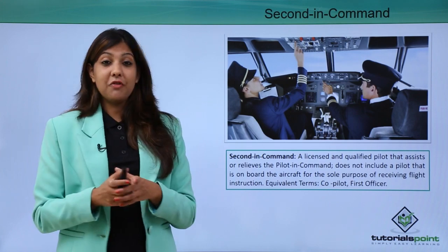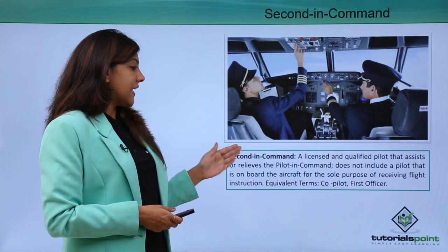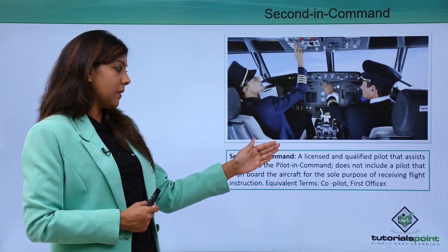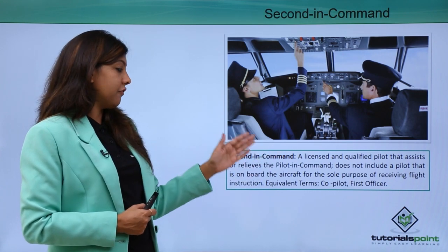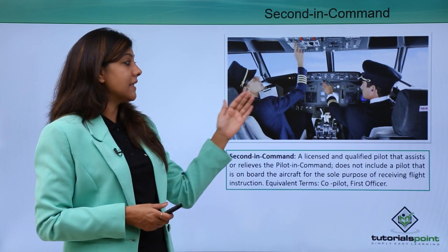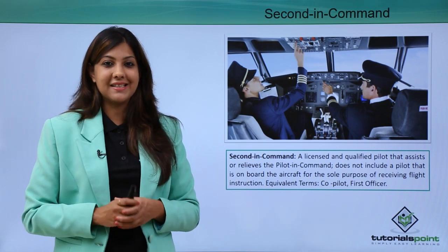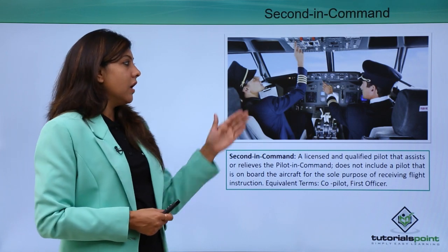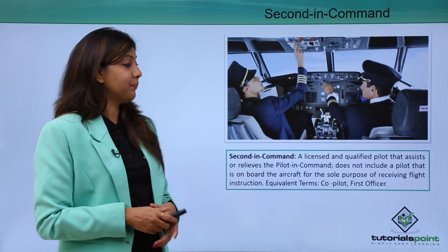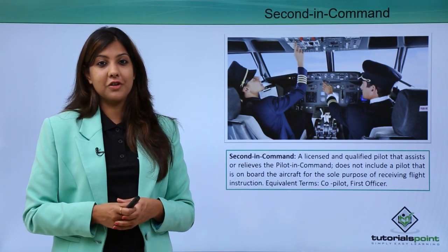The second in command, sitting next to the pilot inside the flight deck, is a licensed and qualified pilot who assists or relieves the pilot in command when required. This does not include a pilot on board solely for the purpose of receiving flight instruction. The co-pilot has three stripes on his uniform, so next time you travel, look for three stripes on the second pilot's shoulder. When the pilot in command leaves the flight deck, the co-pilot is in charge. Equivalent terms are co-pilot and first officer.